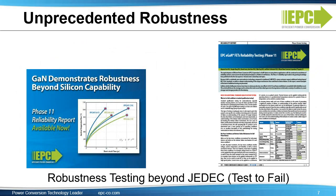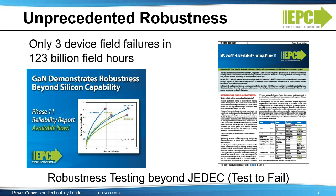Another important feature is the unprecedented robustness of EGAN devices. With a test-to-fail approach to reliability testing, EPC tests devices well beyond JEDEC to improve robustness generation after generation. The test-to-fail report, Phase 11, is available on the EPC website. This report details how EGAN devices show superior short-circuit and thermal stress robustness. EPC's commitment on reliability shows up in the results: 123 billion device hours in the field since January 1, 2017, and only three device failures.